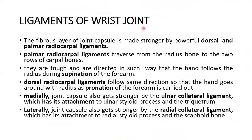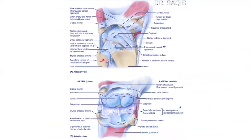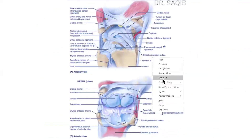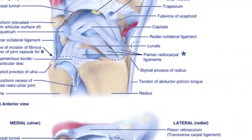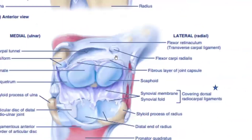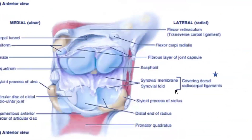The fibrous layer of the joint capsule is made stronger by powerful dorsal and palmar radiocarpal ligaments. Here you can see the palmar radiocarpal ligament, and here the dorsal radiocarpal ligament, which covers the synovial membrane and the synovial fold.